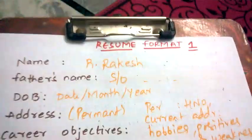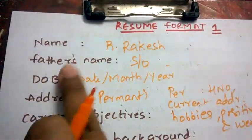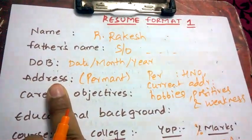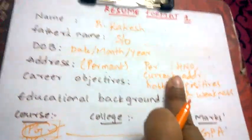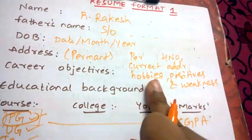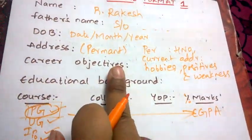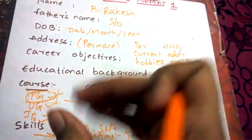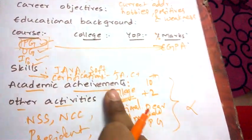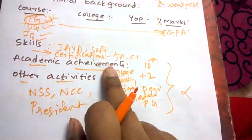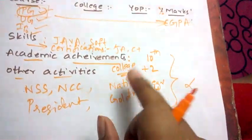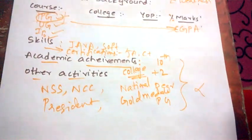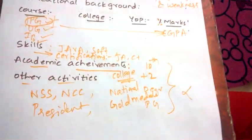To recap: mention your name, father's name, date of birth, and address — including both permanent and current address if needed. You can also add hobbies, strengths, and weaknesses. Then career objectives, educational background starting from your highest degree, skills, and academic achievements — only college-level. Add other activities if applicable.